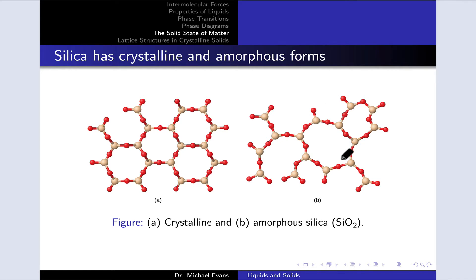On the right, we can see the SiO2 units arranged in a more random way where we don't have those regular shapes that we have in the crystalline solid. This is amorphous silica.